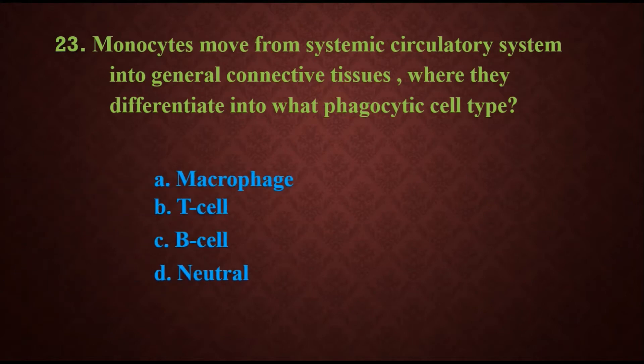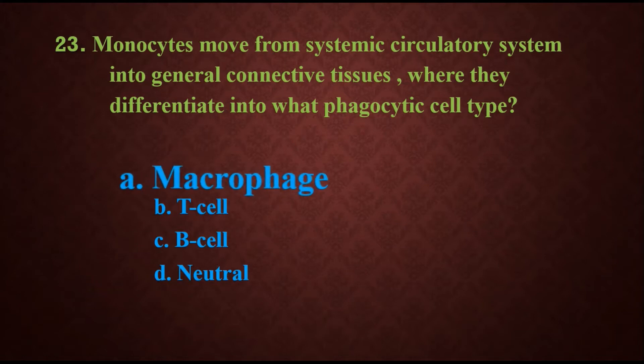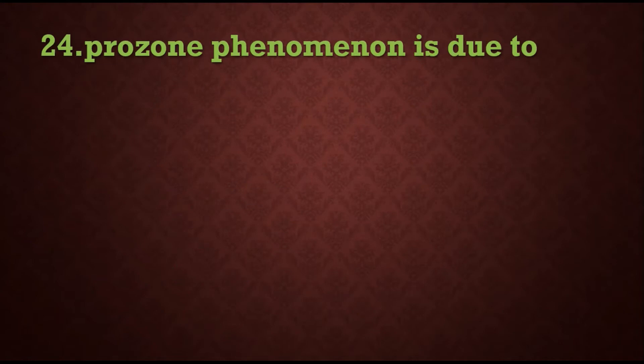Question 23: Monocytes move from the systemic circulatory system into general connective tissues, where they differentiate into what phagocytic cell type? Options are: A) macrophage, B) T cell, C) B cell, D) neutrophil. The answer is obviously macrophage, because monocytes when they enter into tissues and organs are called macrophages.